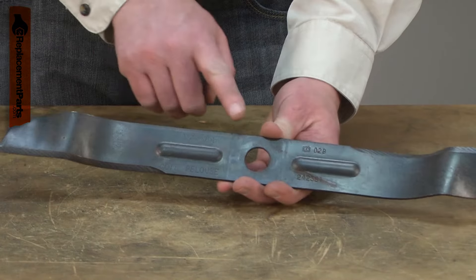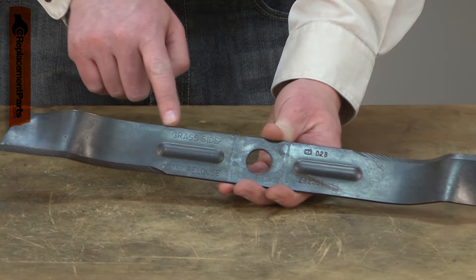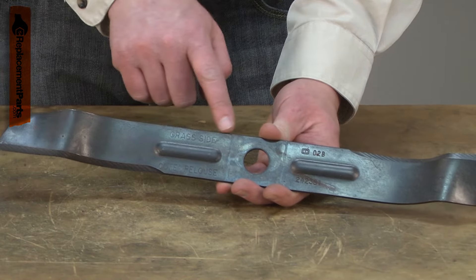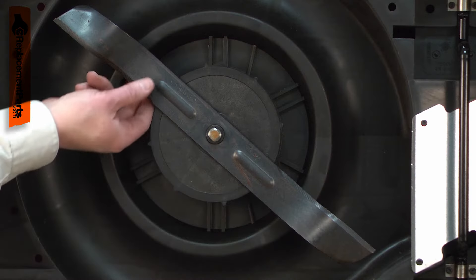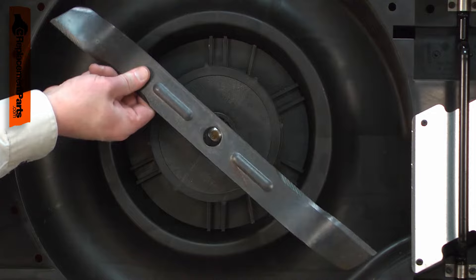The blade will become dull with normal use. It can dull much faster if it is routinely used in dusty conditions to cut weeds or in areas where it might encounter gravel, bark, mulch, or other debris. The blade should be inspected often and sharpened or replaced at least once per year.